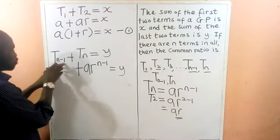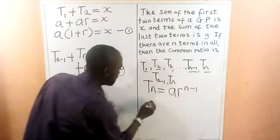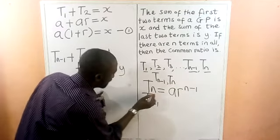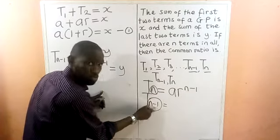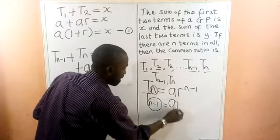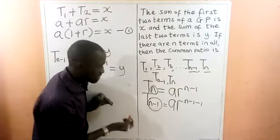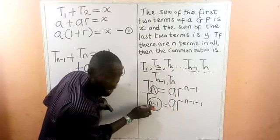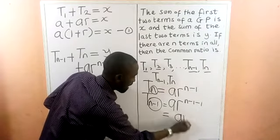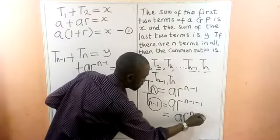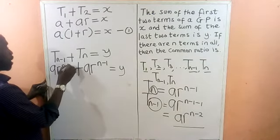For TN minus 1, we replace N with N minus 1 in the formula. So TN minus 1 equals A times R to the power of (N minus 1) minus 1, which gives AR to the power of N minus 2. We can factor out AR to the power of N minus 2, giving AR^(N-2) times (1 + R) equals Y. This is Equation 2.